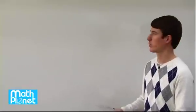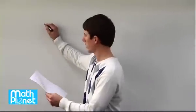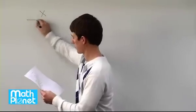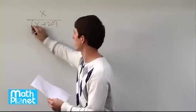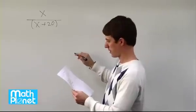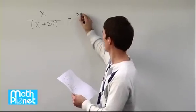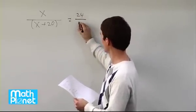Here we have another algebraic equation where we want to solve for x. The equation is x divided by x plus 20, so this is one quantity here, this x plus 20, and that equals 24 divided by 54.